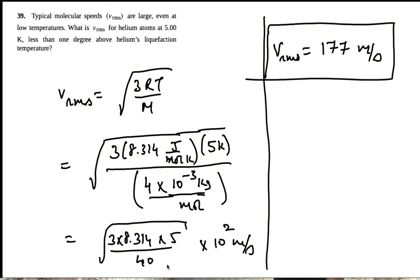So that's the average V-RMS speed of helium molecules at 5 degrees kelvin.